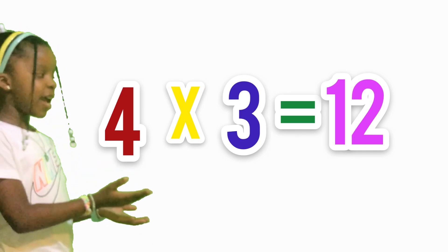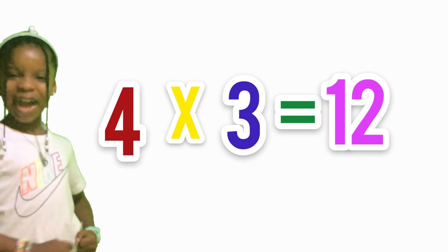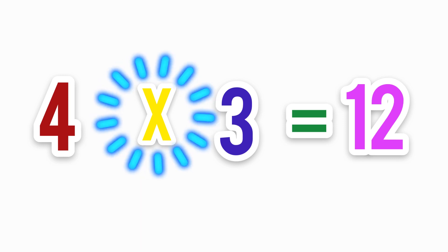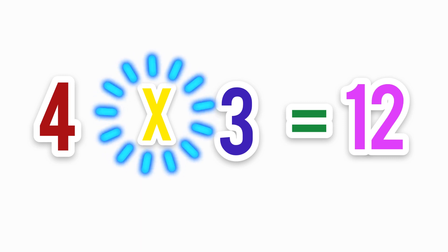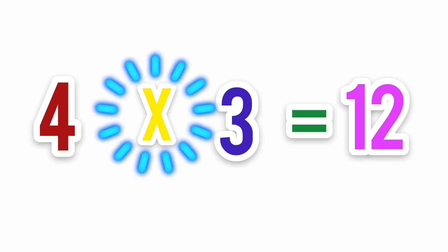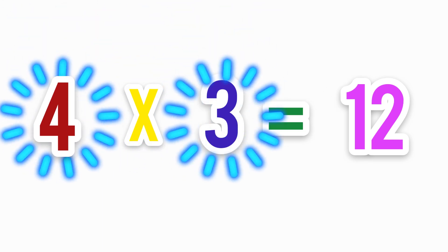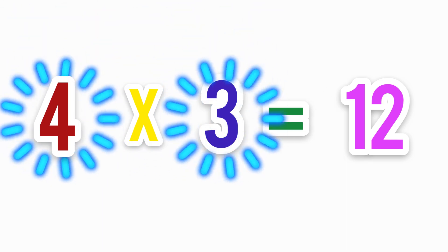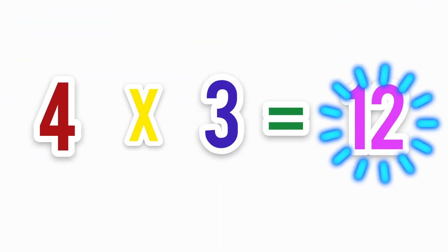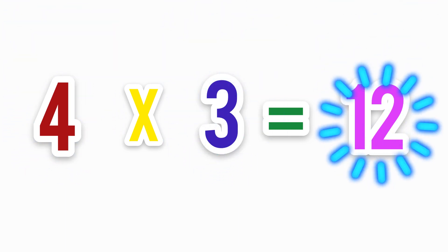Let us look at this multiplication fact. The sign in the middle of the four and the three means times — it shows that you are multiplying. The numbers four and three that we are multiplying are called factors. The answer is called the product.